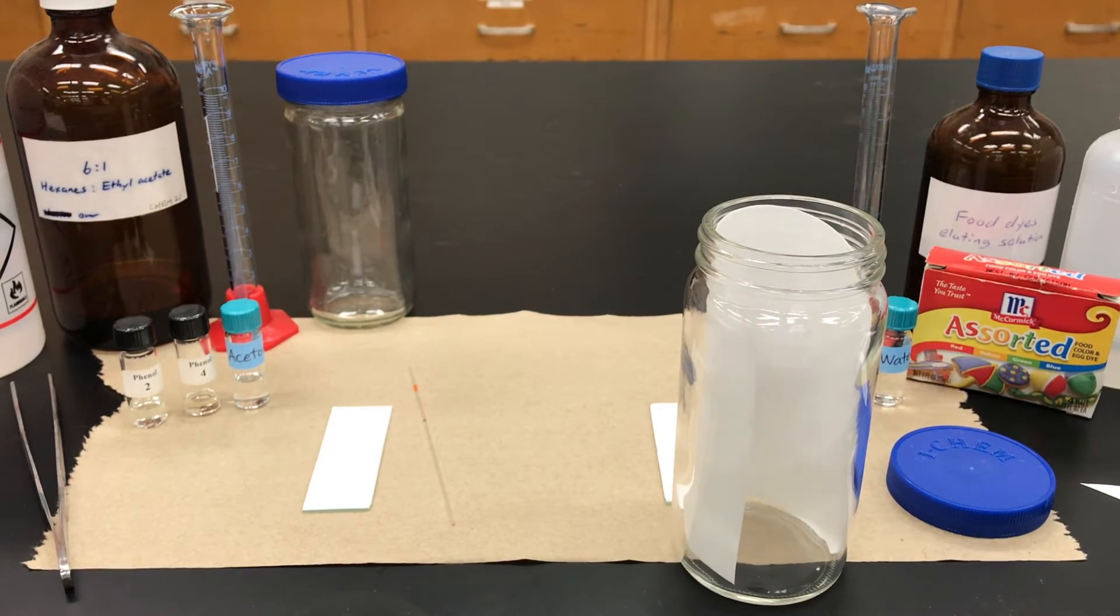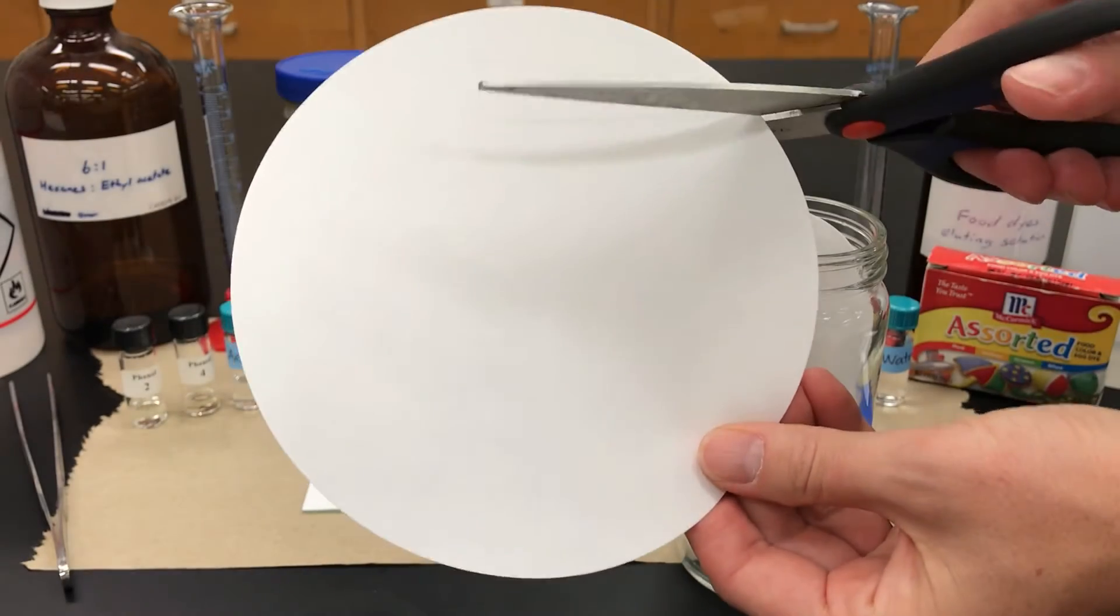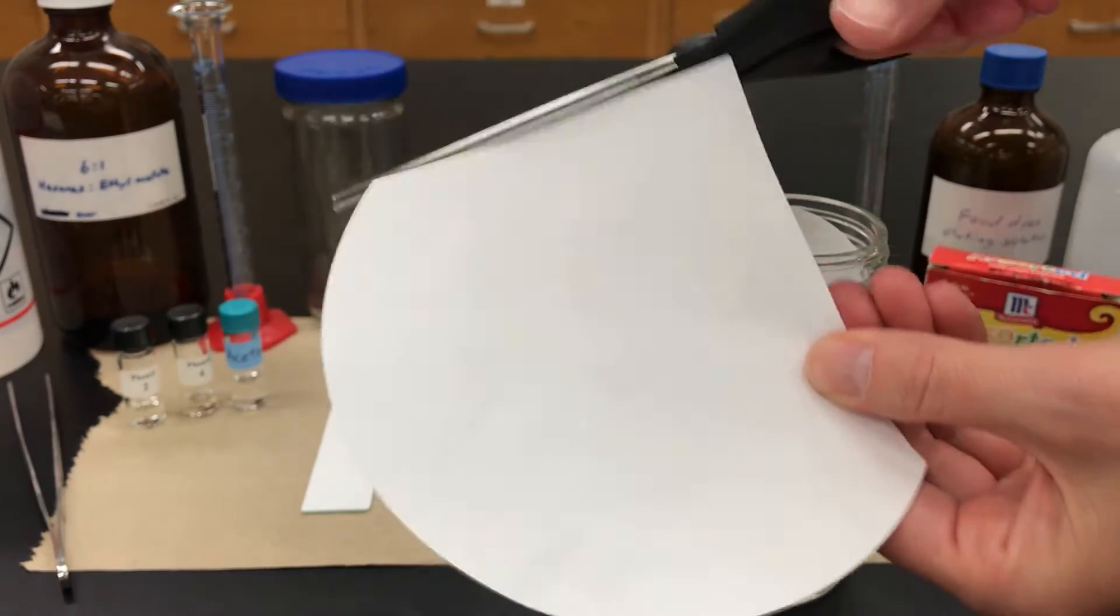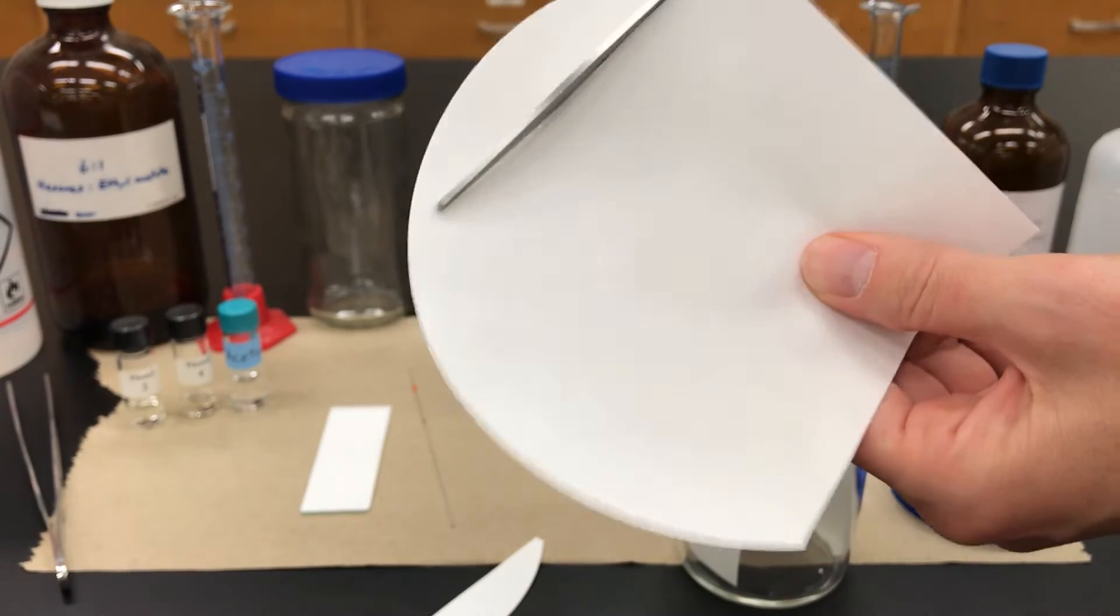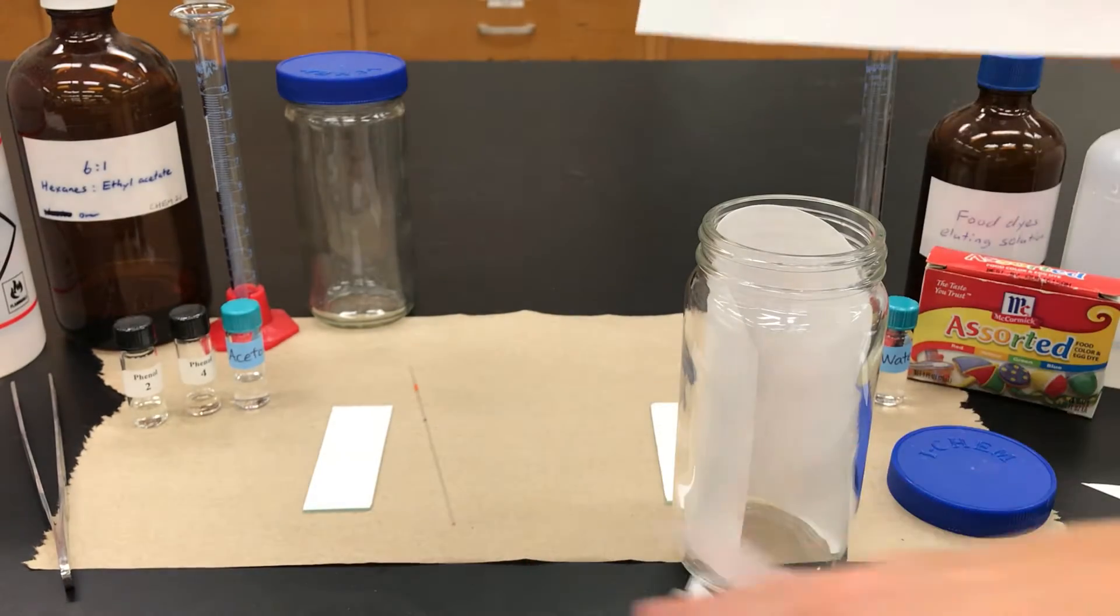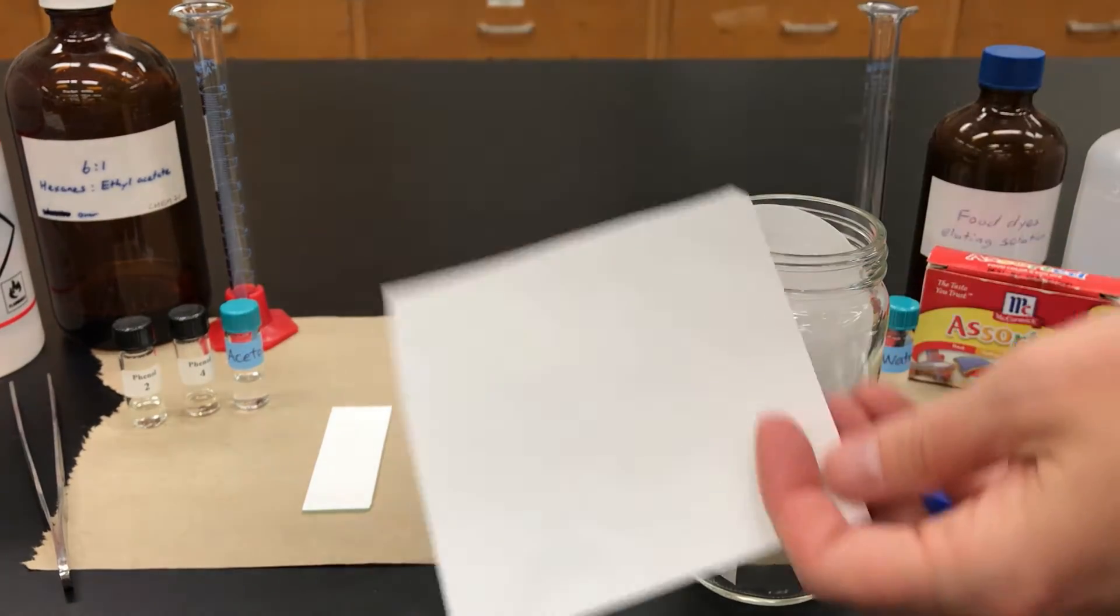I'm going to do the same thing for the second jar. This time I'm going to cut all four sides. That's really just so that when you stick it inside of the jar, it's not obscuring your view that you can still see inside.